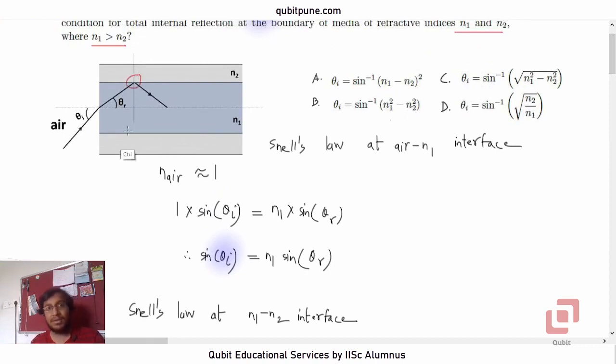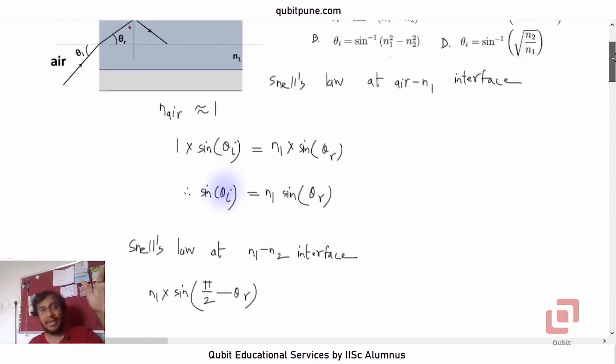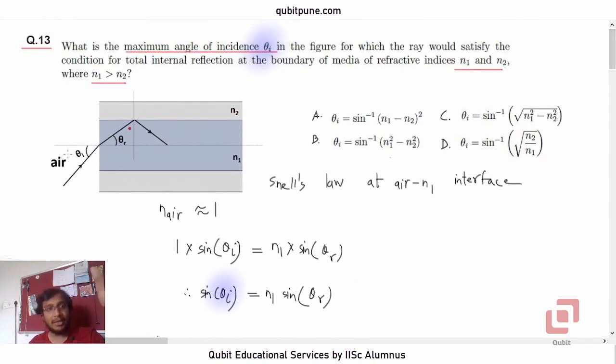This is the angle of incidence and it is a complement of theta_r, correct? So n1 into sine of pi/2 minus theta_r, where theta_r is the angle of refraction at the air-n1 interface. So this will be 90 minus theta_r or pi/2 minus theta_r.